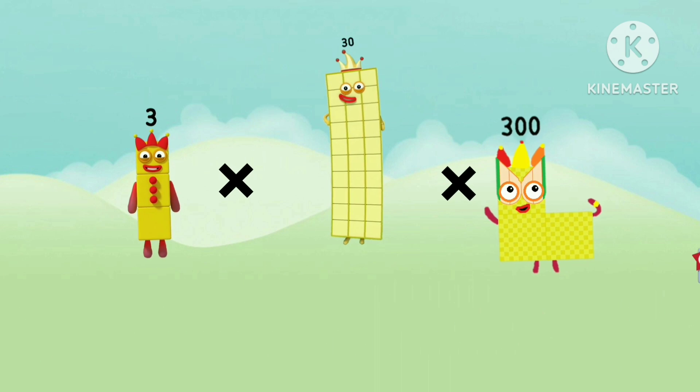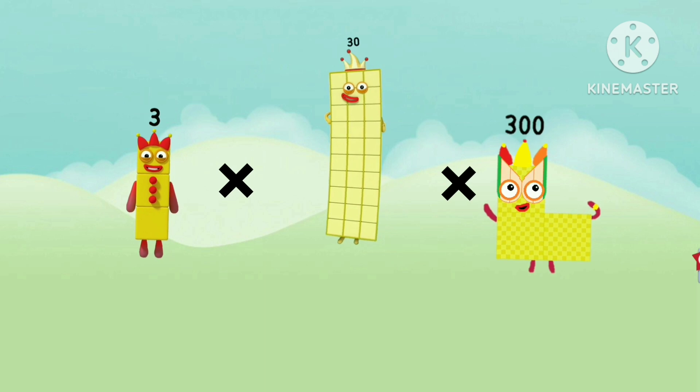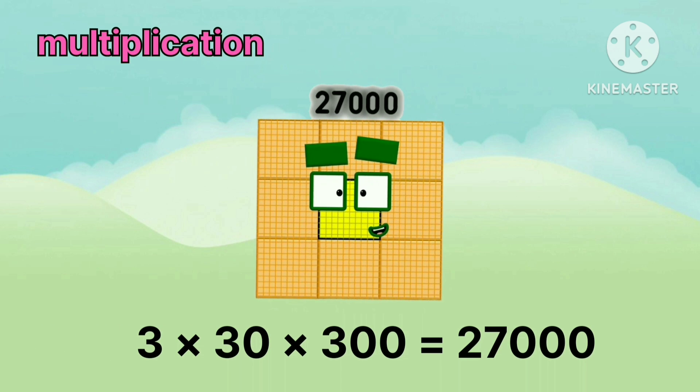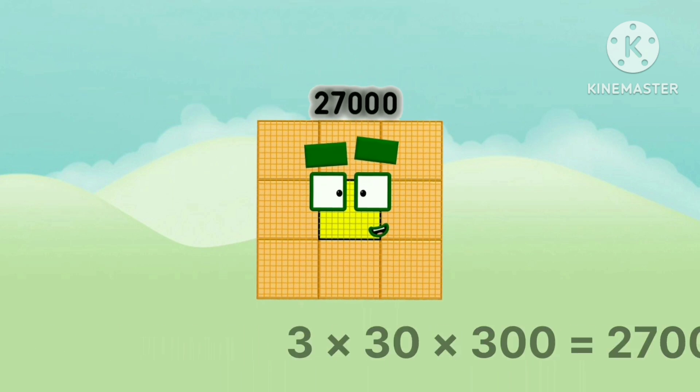3. Multiply by 30. Multiply by 300. Equals 27000.